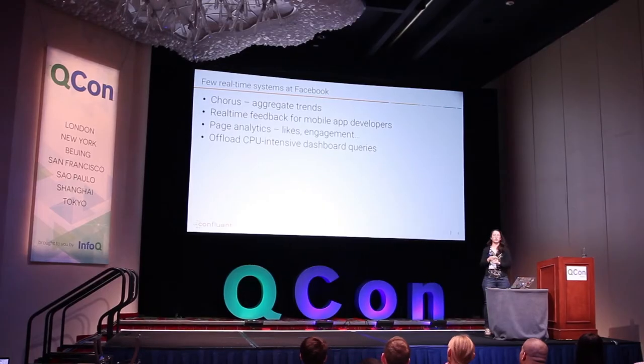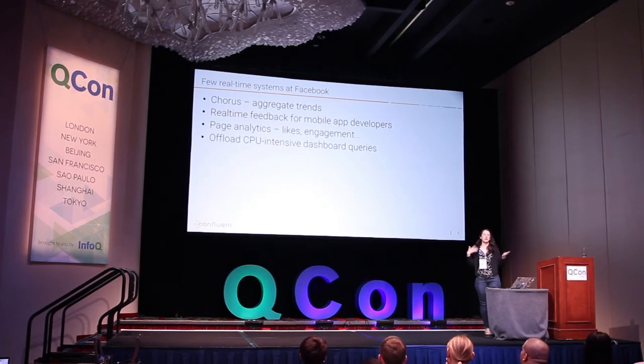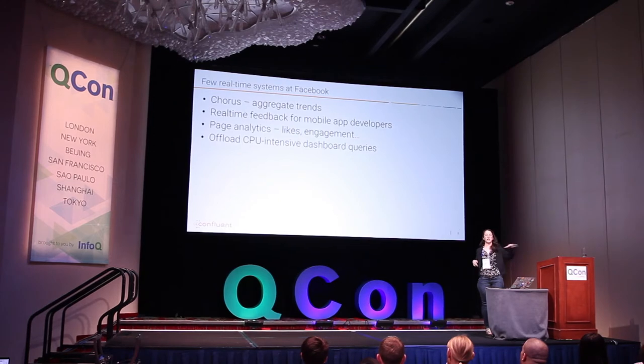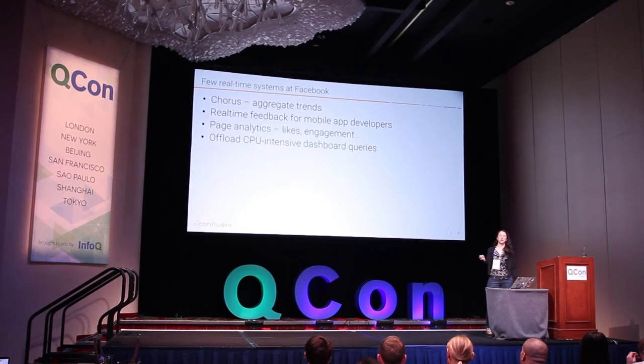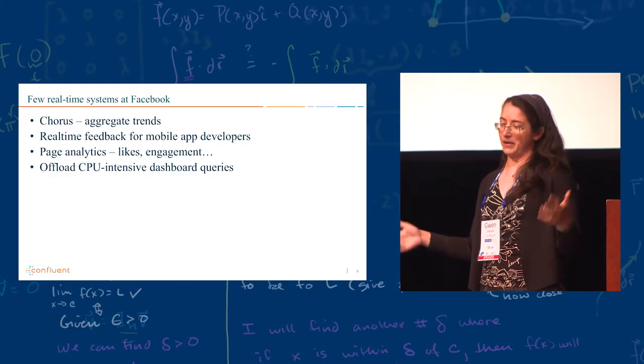So they start out by basically showing what kind of applications are going to talk about. And they have something that kind of aggregates trends. So who is talking about the Super Bowl kind of thing. They have something that does real-time feedback for mobile apps. All of it is things that they call real-time applications, and I call ETL, or streaming data pipelines.